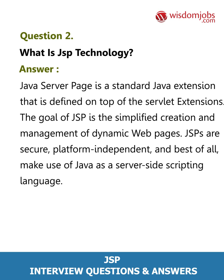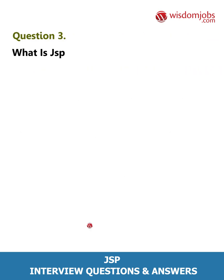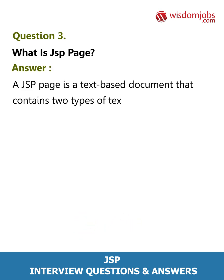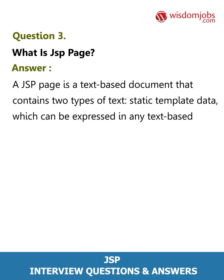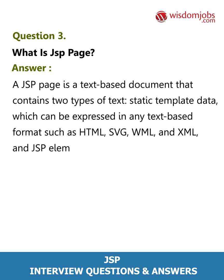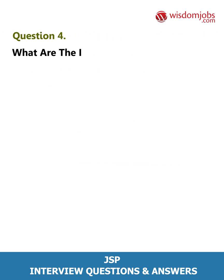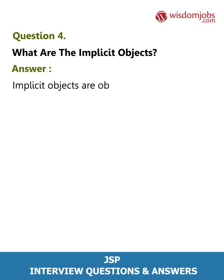Question 3: What is a JSP page? Answer: A JSP page is a text-based document that contains two types of text: static template data, which can be expressed in any text-based format such as HTML, SVG, WML, and XML, and JSP elements which construct dynamic content.